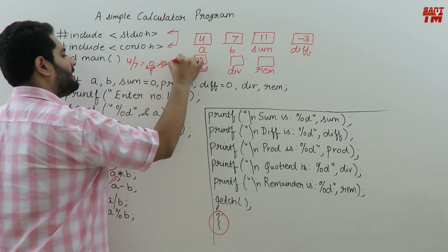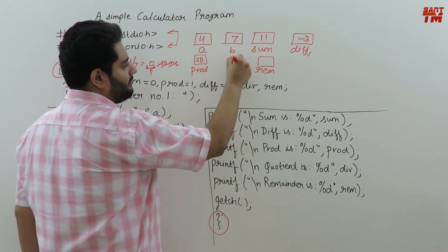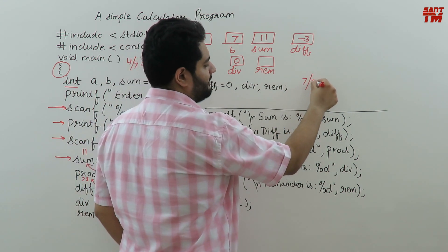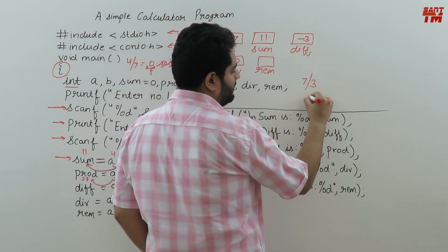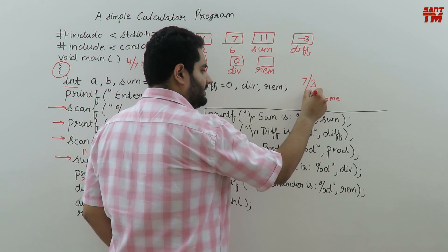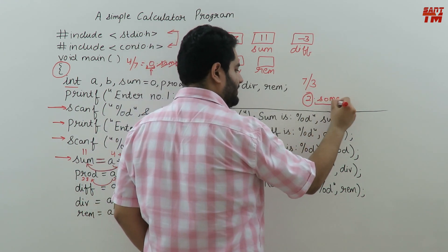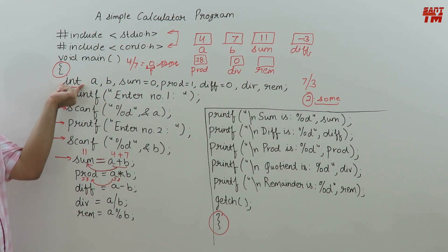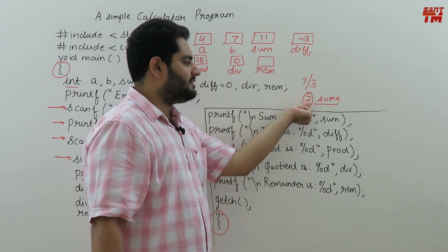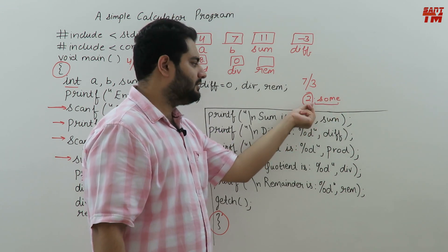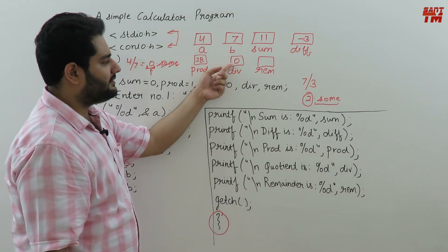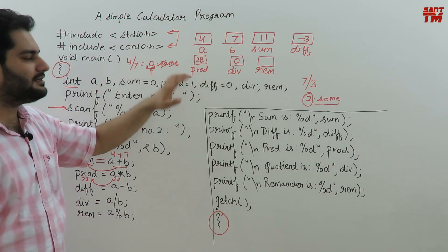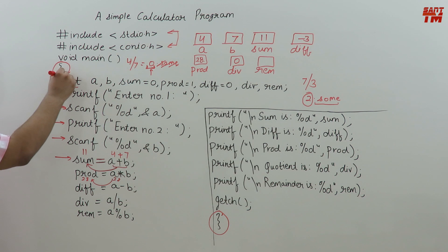The integer part is 0 and the fractional part is discarded, so division holds 0. For example, if the division were 7 by 3, that gives 2 point something — 2 is the integer part and point something is the fractional part. Since memory is declared as int type, only integers can be stored, so division would take 2 only, not 2 point something. Here, 4 divided by 7 gives 0 point something, so only the integer part 0 goes there and the fractional part is discarded. This is how integer memory declarations work.